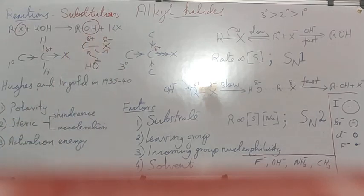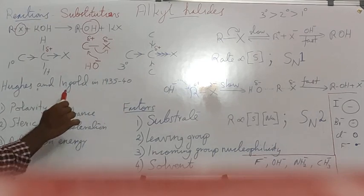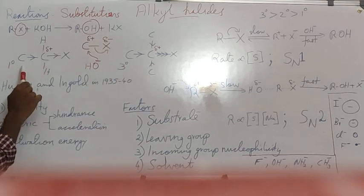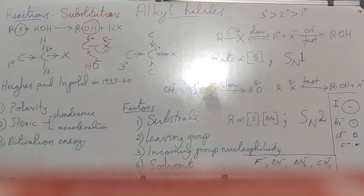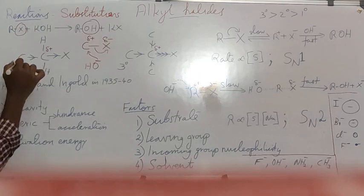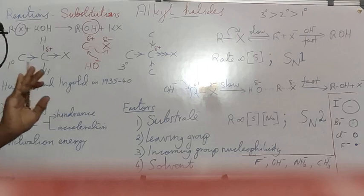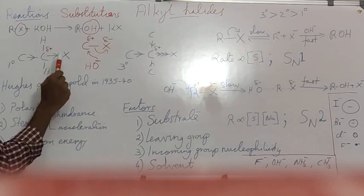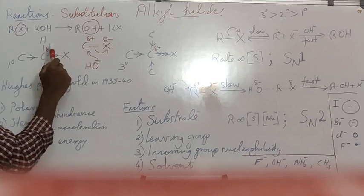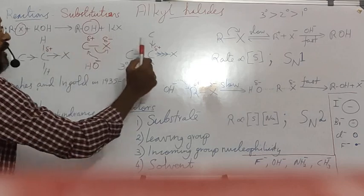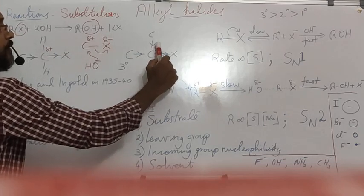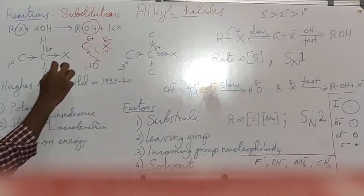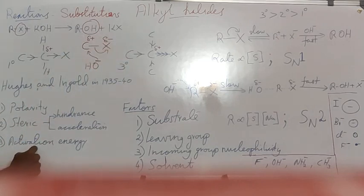This substitution reaction was thoroughly studied in 1935 by Hughes and Ingold. We can consider different halides — here we are considering a primary alkyl halide, and here a tertiary alkyl halide. Methyl groups have an inductive effect, so they donate electron density into the attached carbon. In the tertiary case, we have three methyl groups. There is a carbon-halogen electronegativity difference in both, so a partial positive charge is developed on the carbon in each case. We can explain the substitution reaction using polarity, steric factor, or activation energy.